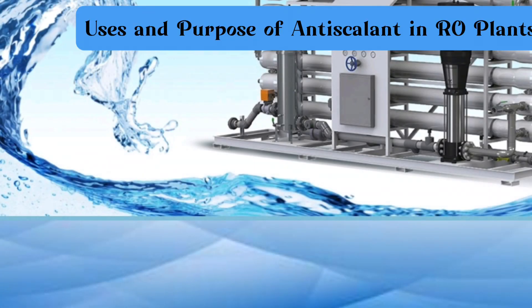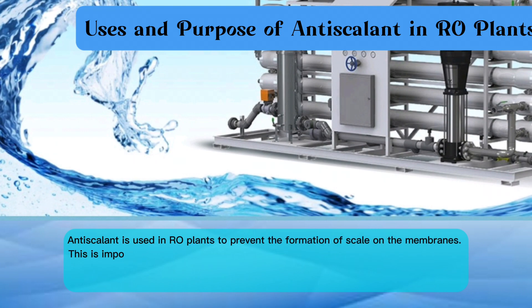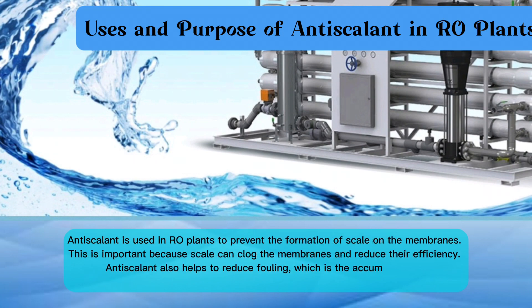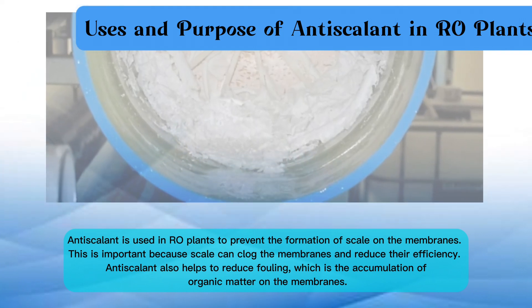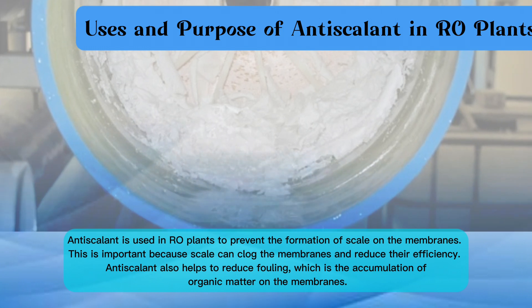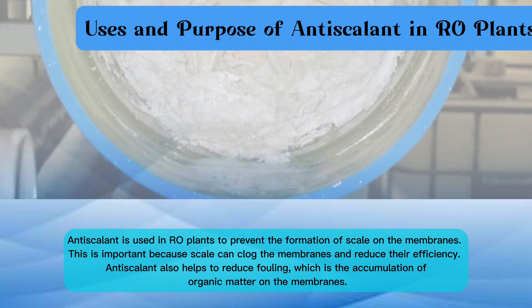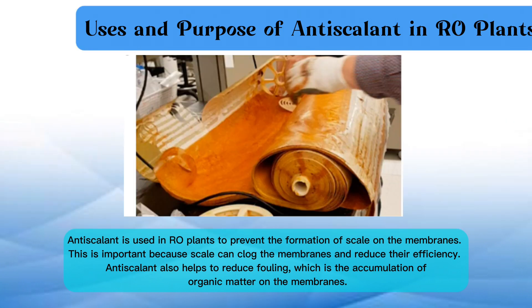Uses and purpose of antiscalant in RO plants. Antiscalant is used in RO plants to prevent the formation of scale on the membranes. This is important because scale can clog the membranes and reduce their efficiency. Antiscalant also helps to reduce fouling, which is the accumulation of organic matter on the membranes.